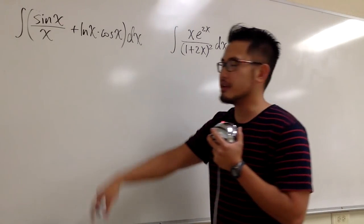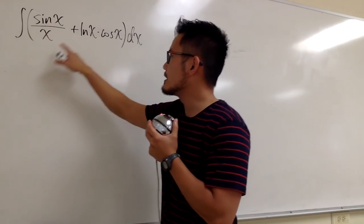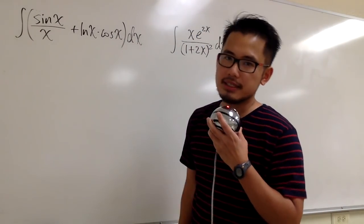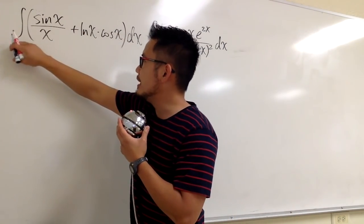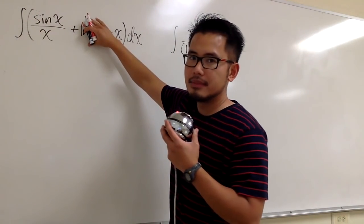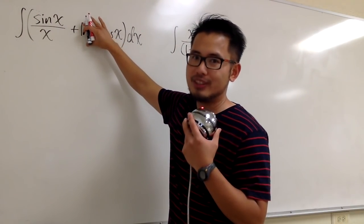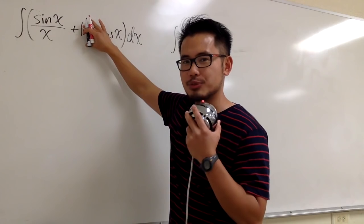Let's just work out the first one right here. We have the integral of sin x over x plus ln x times cos x. And let's just talk about this first. If we don't have this part, if we just have the integral of sin x over x, let me tell you, we will have no answer for that. No nice answer, I should technically say that.